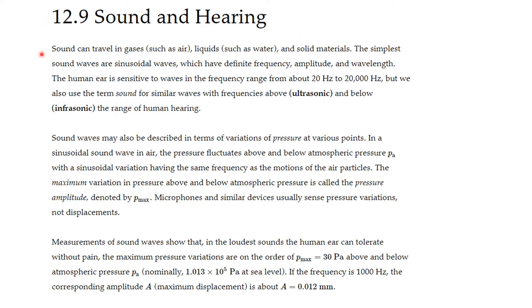Sound and Hearing. Sound can travel in gases such as air, liquids such as water, and solid materials. The simplest sound waves are sine waves, which have definite frequency, amplitude, and wavelength. The human ear is sensitive to waves in the frequency range from about 20 hertz to 20,000 hertz. But we also use the term sound for similar waves with frequencies above, called ultrasonic, and below, called infrasonic, the range of human hearing.